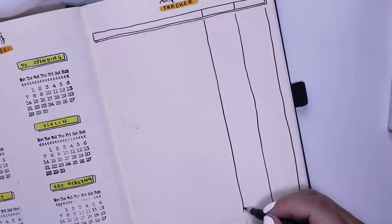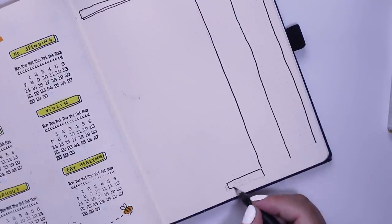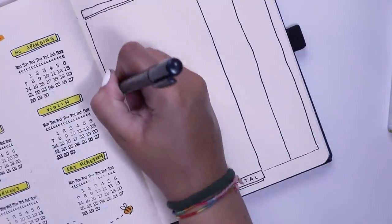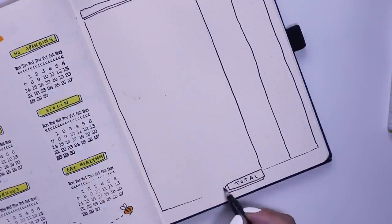Then I wrote in a little box at the bottom that says total. That's when I do all of my expenses at the end of the month, and I can total all the money that I made and all the money that I spent.